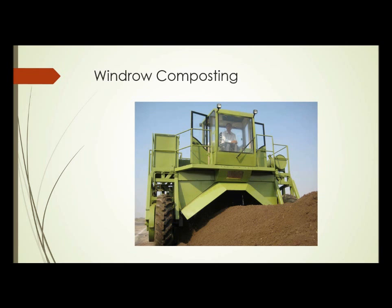Here's an example of windrow composting. This type of machine can drive down a windrow, and based on the height of the person in the cabin, this windrow is probably close to five or six feet high and probably double that in width. This machine will straddle the windrow, run down it, keep the windrow contained, and has turning blades that mix the material, turn it, and aerate it — a very efficient way to compost large amounts of material.